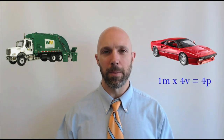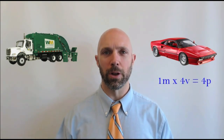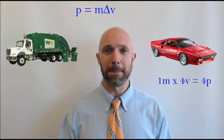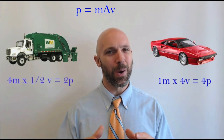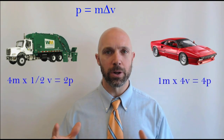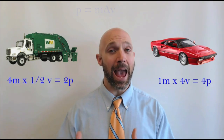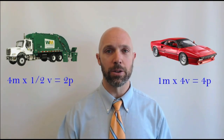How about a momentum battle between a fancy sports car and a slow, sluggish garbage truck? If the sports car is going 4v with a mass of 1m, that's 1 times 4, a total of 4p. The truck, however, has a mass of 4m but is going half of v — so 4 times half of v gives just 2p, ending up with momentum half that of the sports car.